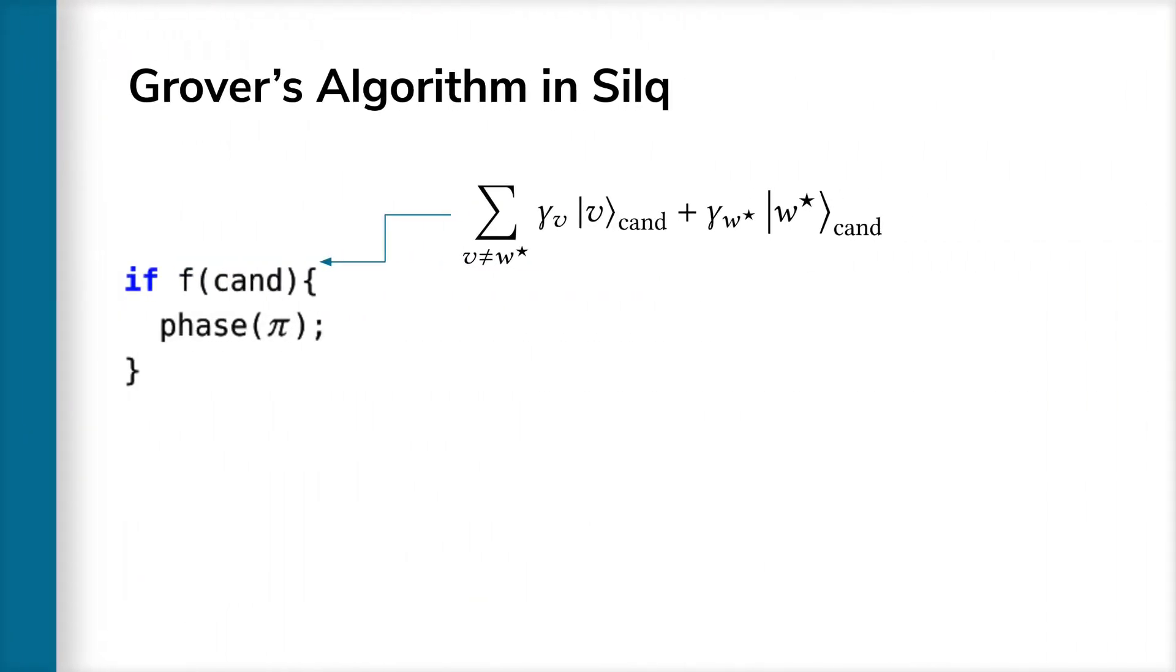Throughout the computation of Grover's algorithm, variable cand contains a complex linear combination of all possible candidate solutions to our search problem, which includes both non-solutions v and the unique true solution w star. Here, we have written such a complex linear combination by separating out w star. Now, evaluating the condition displayed on the left-hand side requires evaluating the condition f of cand, which yields 0 for non-solutions v and 1 for solutions w star, which we store into a temporary variable cond, as indicated in the second state.